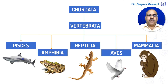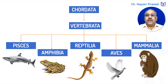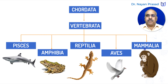Pisces is the group of fishes. Amphibia includes frog-like creatures. Reptilia includes lizards and snakes. Aves is the group of birds. And Mammalia is the highest developed group, including man himself.